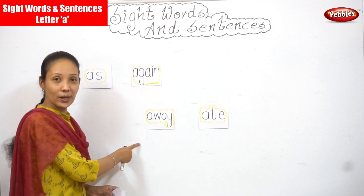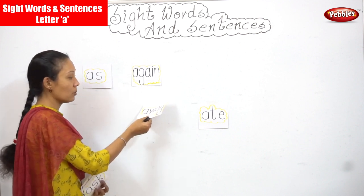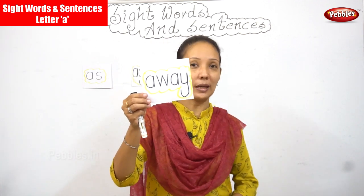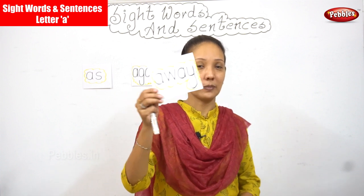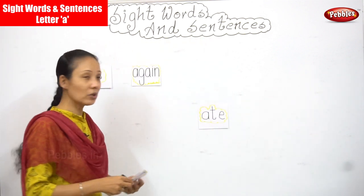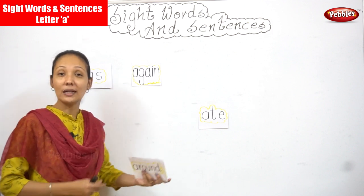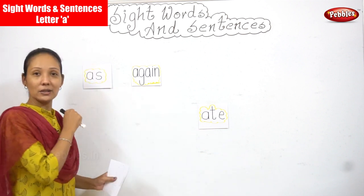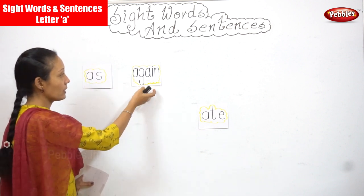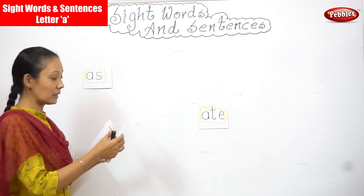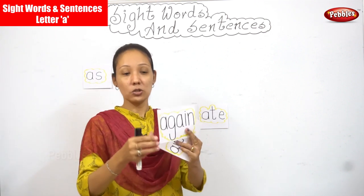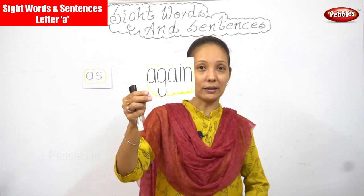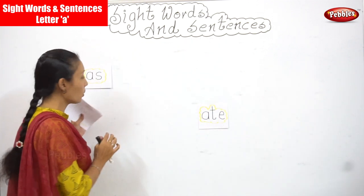Yes — 'away.' We are removing the word 'away' from the board. The word is 'away.' Now you have only three more words left. Where is the word 'again'? Yes, you have 'again' over here. I'm removing the word 'again' from the board, showing it to you closer — the word is 'again.'